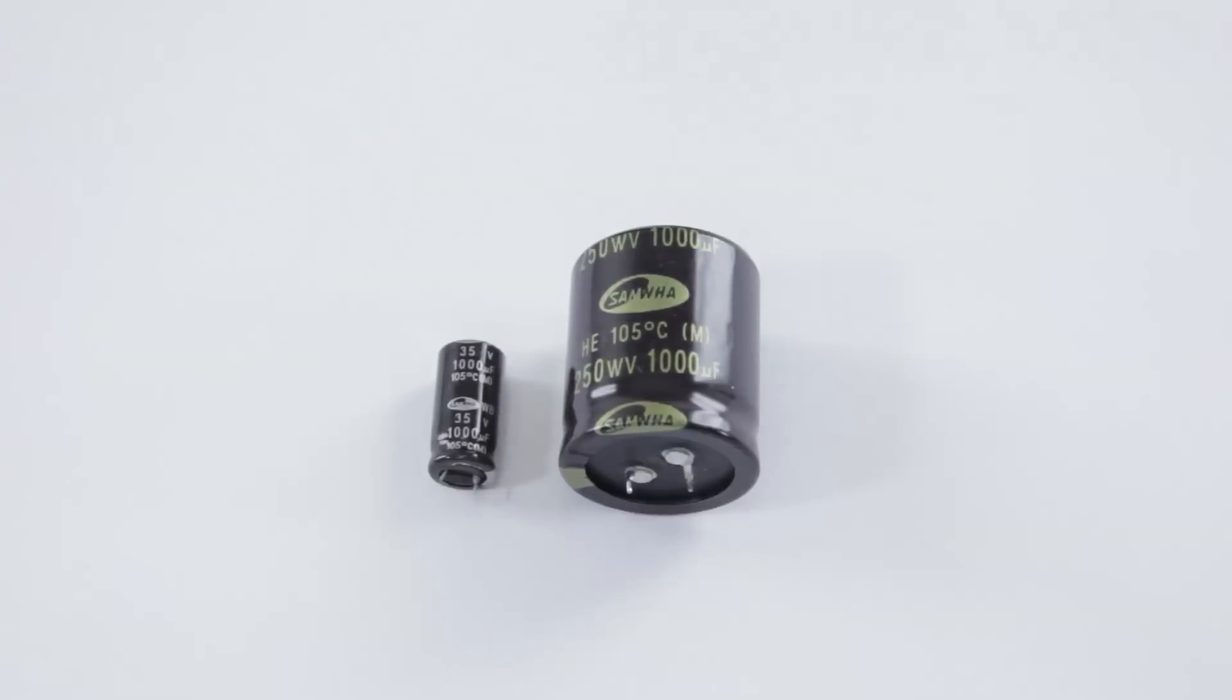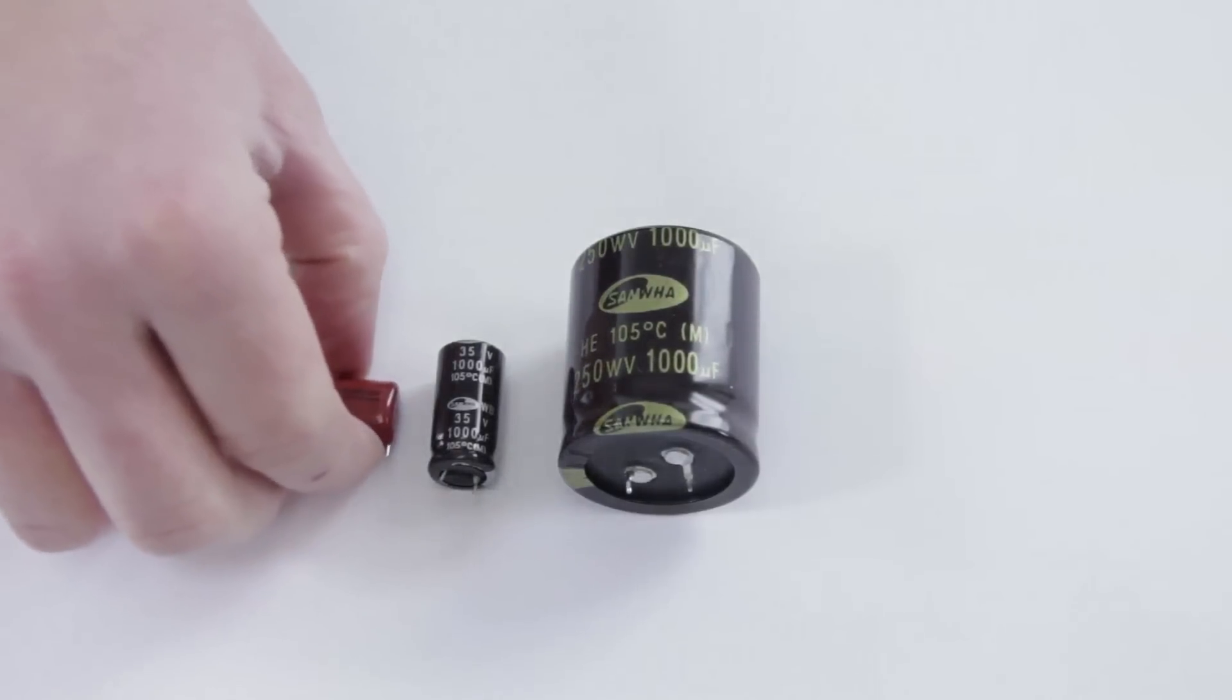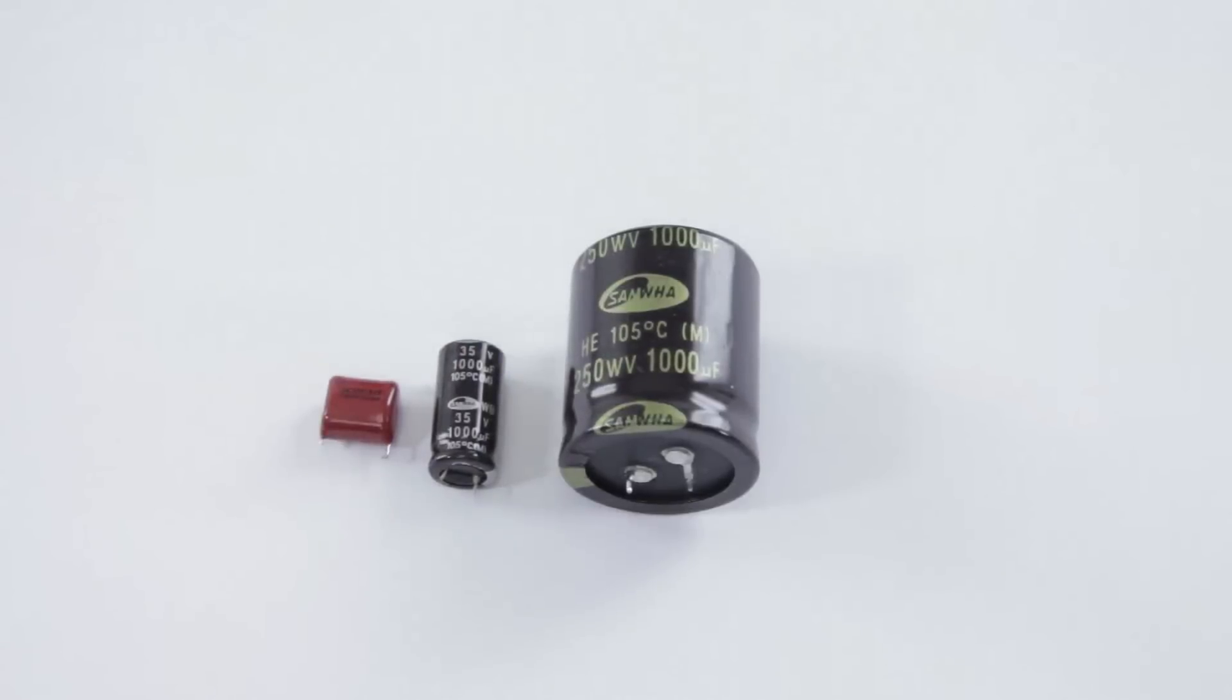In a power supply generally you're going to see aluminum caps like this and possibly some of the polyester style like that. Generally they're going to be used for either filtering out DC because they allow AC to pass through, or they're going to be used to help filter and steady a DC voltage going out to the main board or to the T gun or something like that.